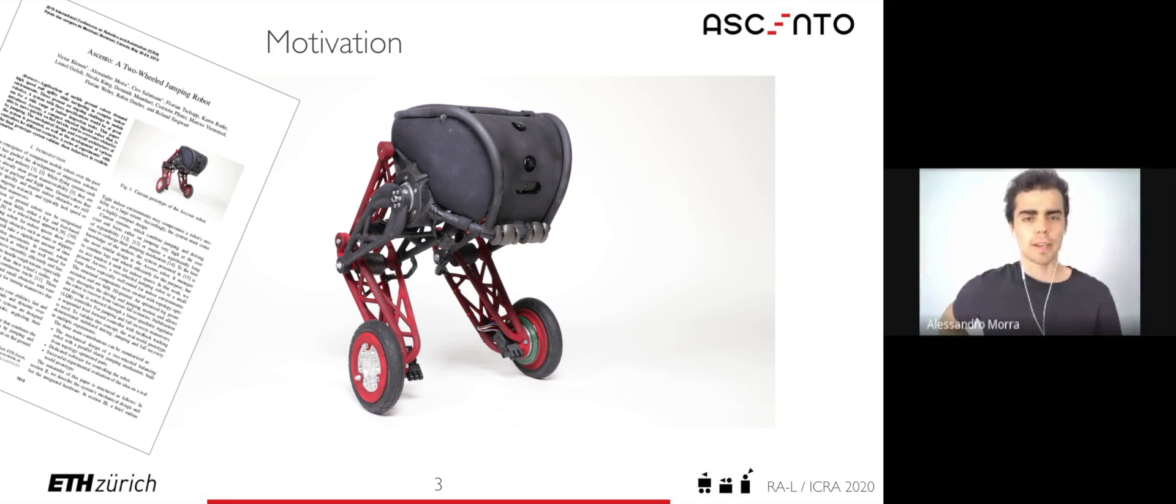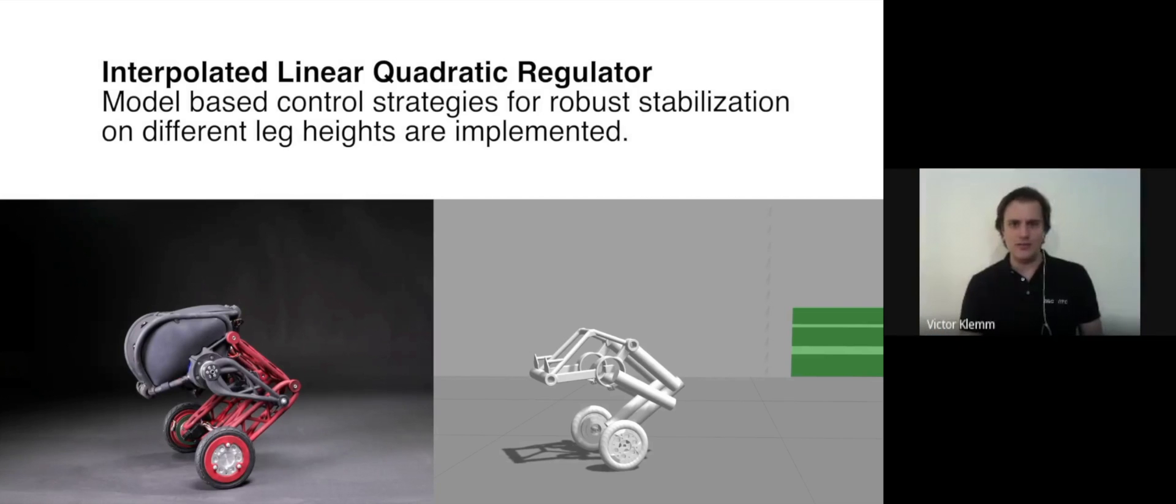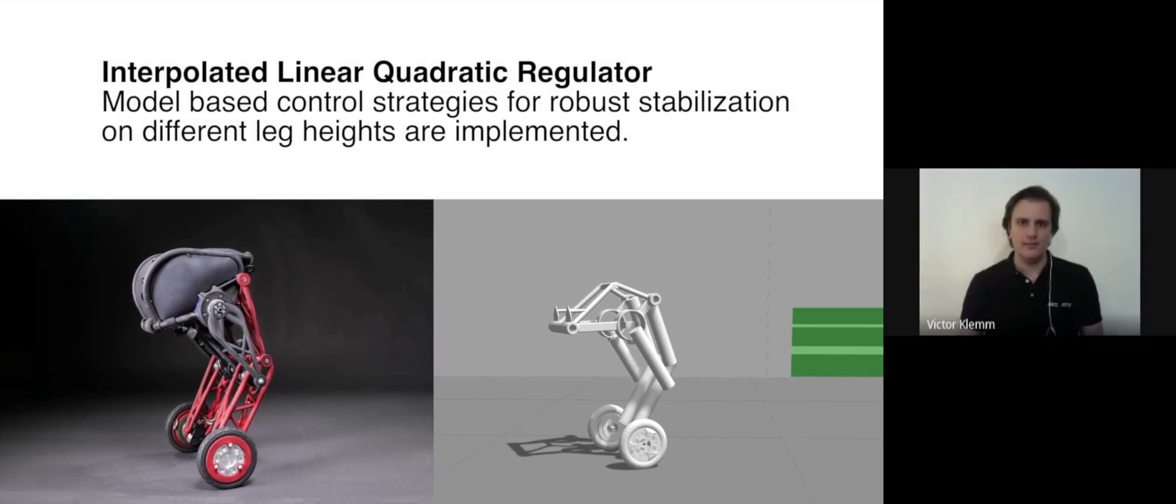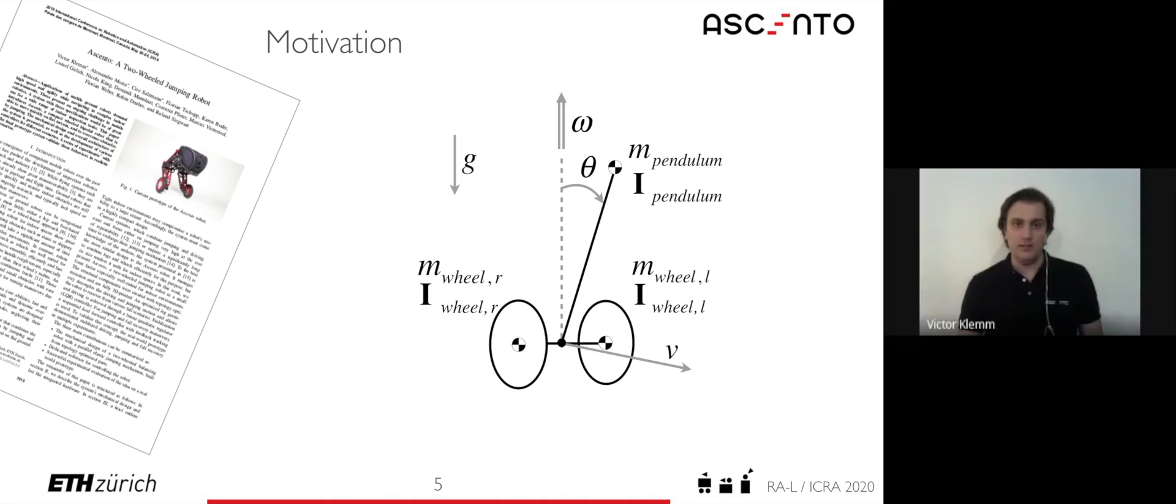And how was it controlled back then? We used a linear quadratic regulator to stabilize the robot which we interpolated on different leg heights. The model used in the LQR was a simplified two-wheeled inverted pendulum linearized around the upright equilibrium point. It was robust but not very versatile.